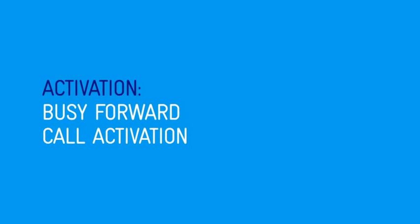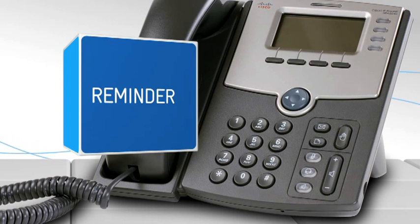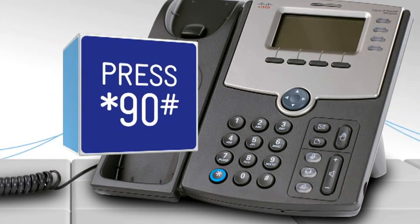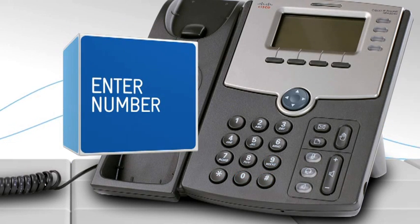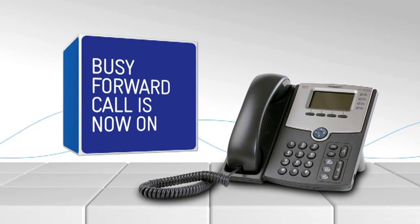Busy forward call activation. To forward your calls when the line is busy, firstly make sure call waiting is turned off, or this function won't work. Lift the telephone handset. Press star, nine, zero, hash. Enter the number you wish calls to be forwarded to. Replace the handset. Busy forward call is now on.